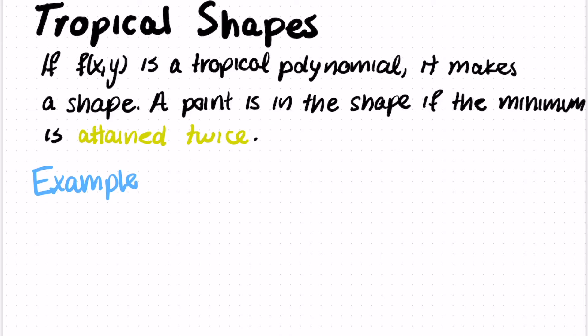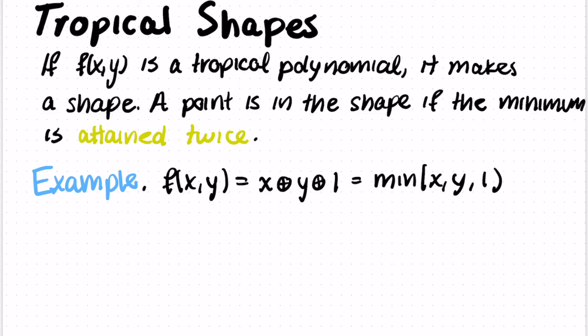For example, if my polynomial is f(x,y) equals x tropical plus y tropical plus 1, we can rewrite this as the minimum of x, y, and 1. That minimum has three terms inside of it: x, y, and 1. For some special inputs of x and y, we're going to find that that minimum is achieved by more than one of the terms at once.